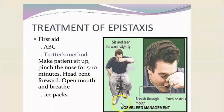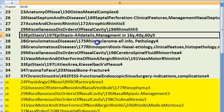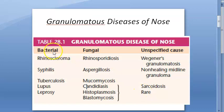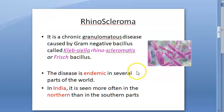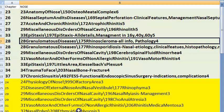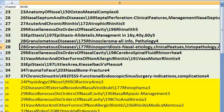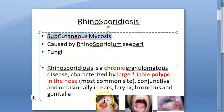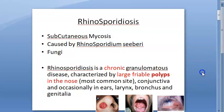Rhinoscleroma is caused by Klebsiella rhinoscleromatis — a bacterial granulomatous disease of the nose. Rhinosporidiosis is a fungal cause — subcutaneous mycosis caused by Rhinosporidium seeberi, producing large friable polyps. This is a chronic granulomatous disease caused by fungi.